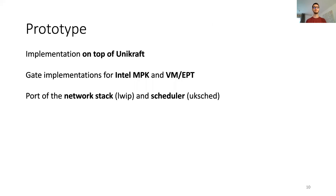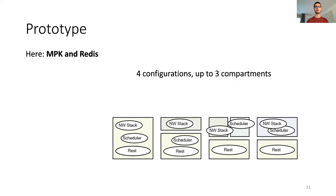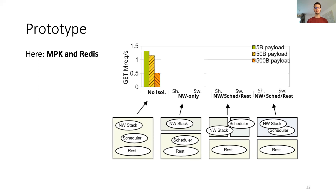We have developed a prototype on top of Unicraft with two gate implementations: Intel MPK and VMs. We have ported the network stack and the scheduler to run as isolated components. Here, I am going to present some results that we obtained with Redis and MPK, but there is more in the paper. In this example, we have four different isolation strategies and up to three compartments. We gather results for three payload sizes and two different gate implementations — one that shares the call stack across compartments and one that isolates it properly.